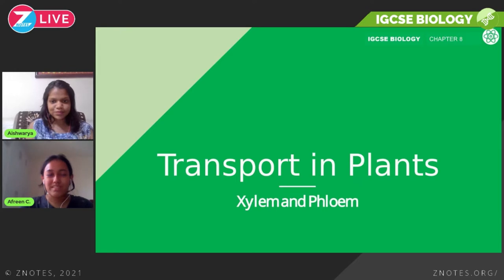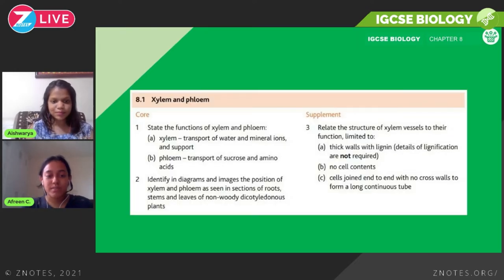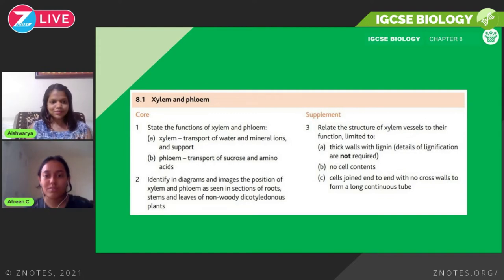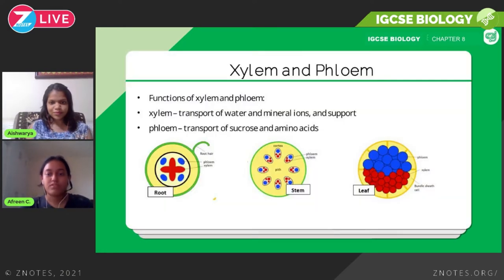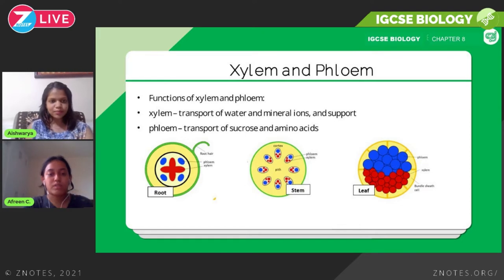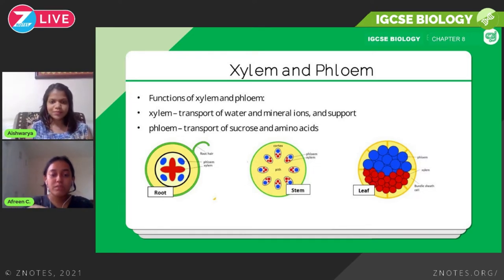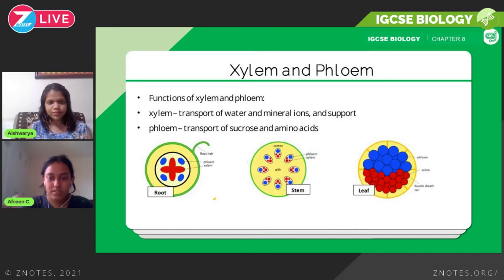The first part is xylem and phloem. These are basically the two main vessels in plants. The syllabus states that you need to know the functions of these two vessels, and you need to be able to identify them in different diagrams and in different parts of the plants, and relate the structure of these vessels to their functions. Xylem and phloem are the two main vessels that transport nutrients throughout the plant. The xylem is responsible for transport of water and mineral ions, as well as supporting the plant, while the phloem vessel is responsible for the transport of sucrose and amino acids.